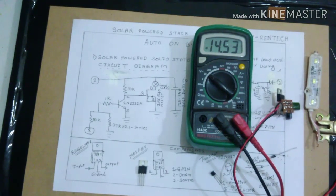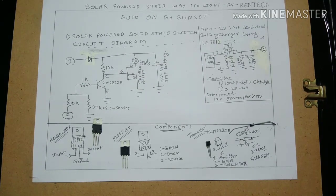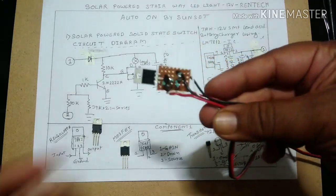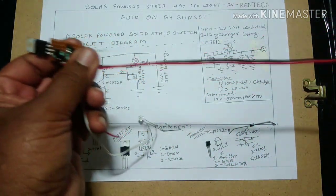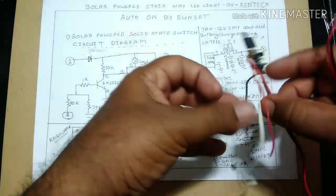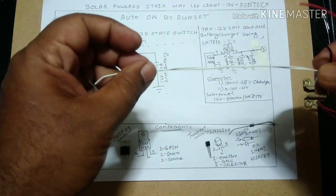Now we will move to the switching circuit creation. This is also designed in a small general purpose PCB. Here I have the input from the charger and this would be the line that would be going to the stairway LED, and these are the lines that will go to the solar panel.